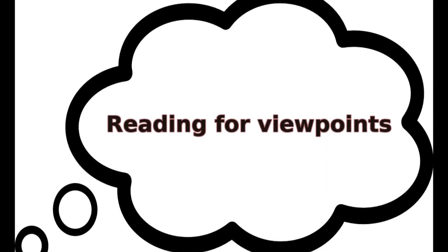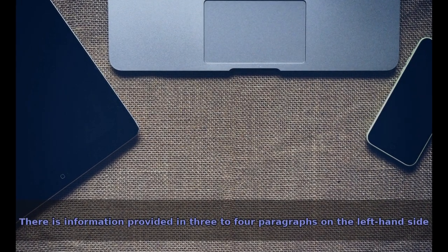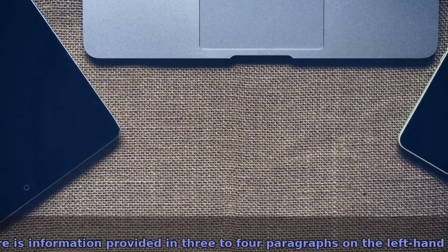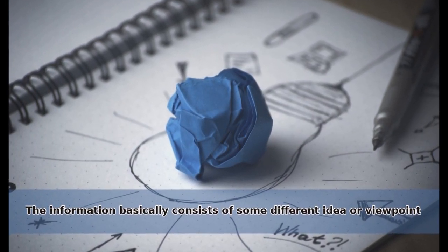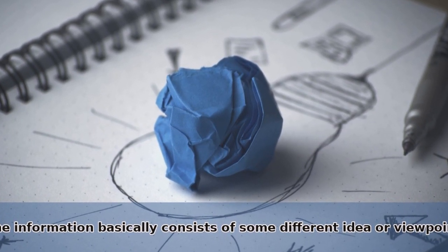Last reading part four is reading for viewpoints. In this part, there is information provided in three to four paragraphs on the left hand side. The information basically consists of some different idea or viewpoint about particular subject or activity.